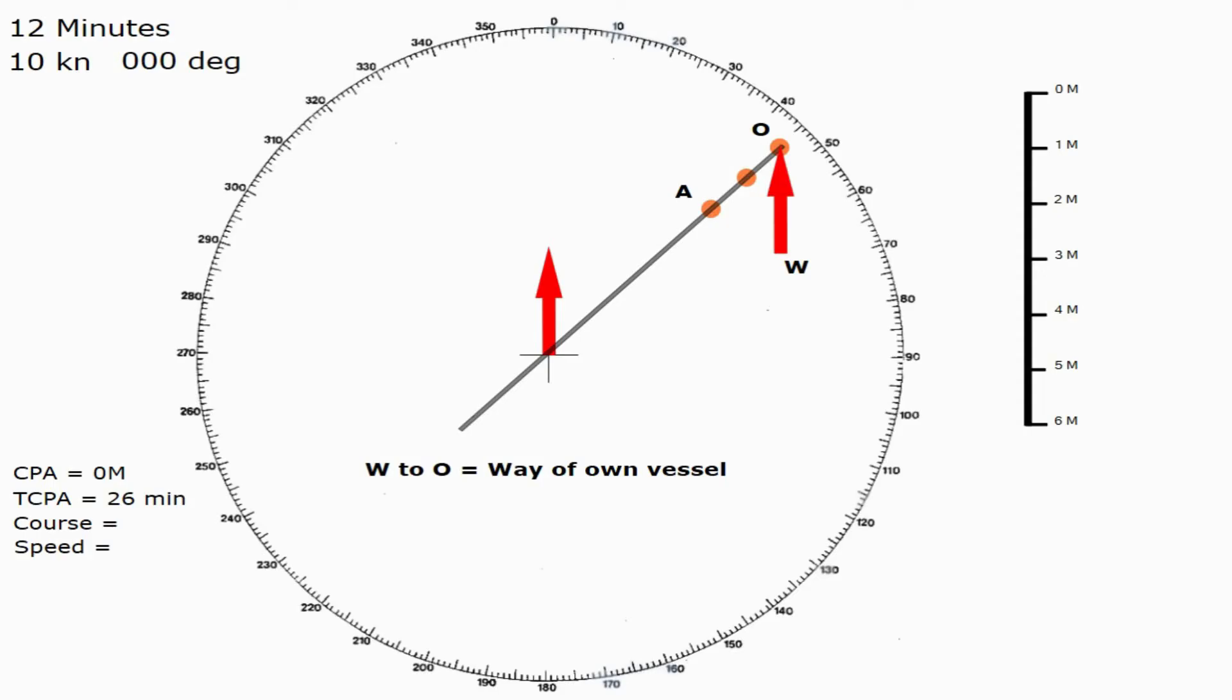To find the course and speed of the other vessel, we simply want the vector going from W to A. And we label that WA, which is way of another vessel. And simply the vector joins the two together. Now, as we know from maths, vectors are a component of distance and bearing, or speed and bearing. Otherwise, it would just be a measurement, but now a vector contains more information.